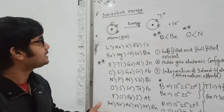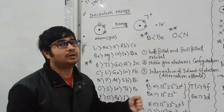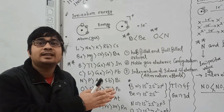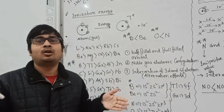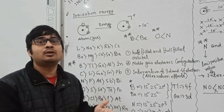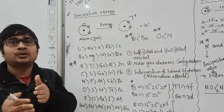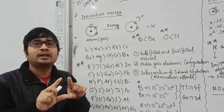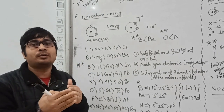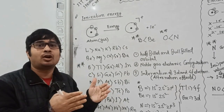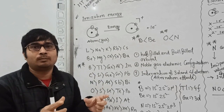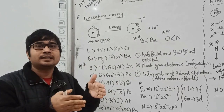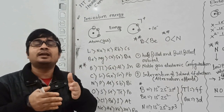But there are a few exceptions in periods as well. In general, in periods, ionization energy increases from left to right. Why? Because as you go from left to right, the atomic radius decreases. And if the size of the atom decreases, you will need more energy to remove an electron from that atom. That's why ionization energy increases from left to right in periods.